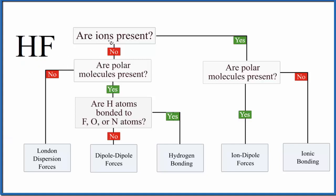The first thing we need to look at is: are there any ions present? We have our molecular compound, and there's no negative or positive after it, so we don't have any ions present. We say no and can get rid of all this right here.